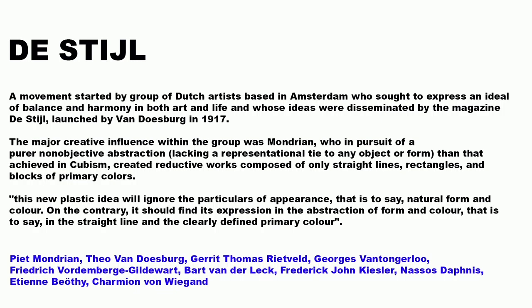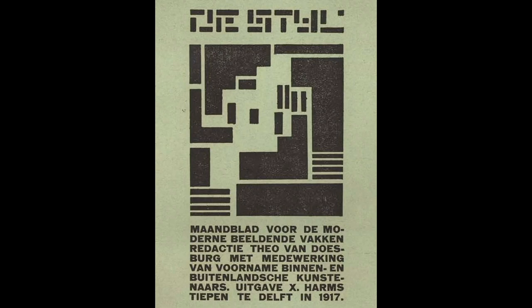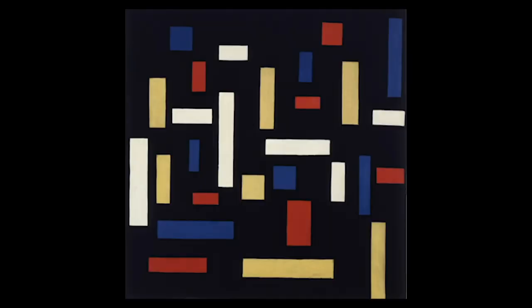De Stijl was a movement started by a group of Dutch artists based in Amsterdam, who sought to express an ideal of balance and harmony in both art and life. Their ideas were disseminated by the magazine De Stijl, launched by Van Doesburg in 1917. The major creative influence within the group was Mondrian, who, pursuing pure non-objective abstraction beyond even Cubism, created reductive works composed of only straight lines, rectangles, and blocks of primary colors. Their new plastic idea would find expression in the abstraction of form and color — the straight line and the clearly defined primary color.